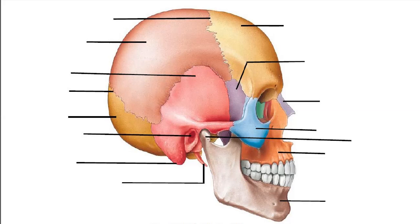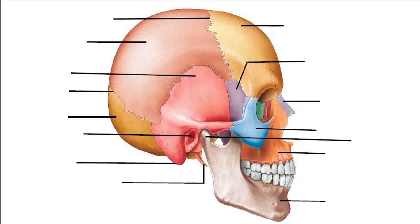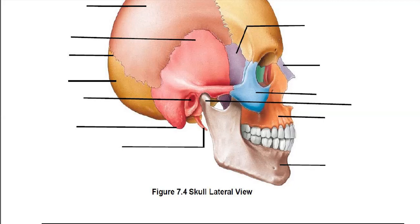Just behind the jaw we have this little almost spike that sticks down — this is the styloid process. It's kind of buried in your skull and you're not going to be able to feel that on yourself. Just behind that, just behind the ear, is this large process — the mastoid process. You can definitely feel this: put your finger back behind your ear and you'll feel a large bone that kind of sticks down. That's the mastoid process, which is part of the temporal bone. This hole in the temporal bone is for your ear canal; the hole in the bone is called the auditory meatus.